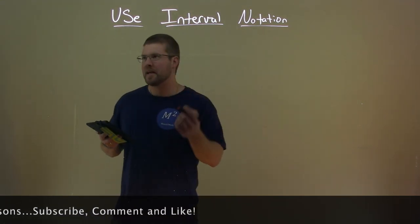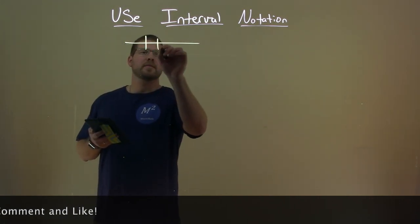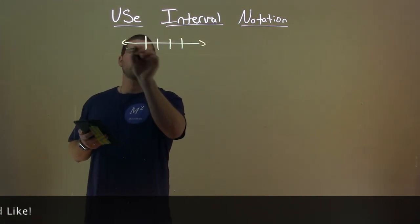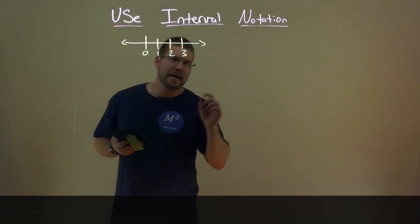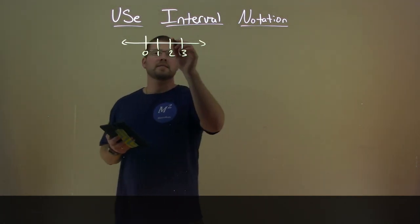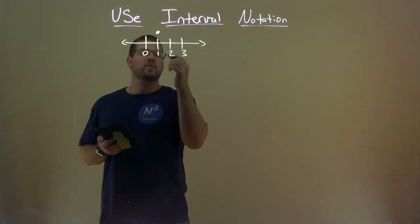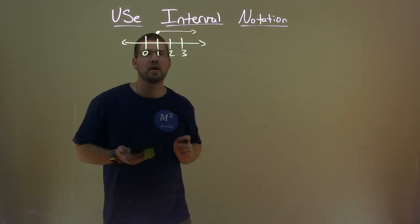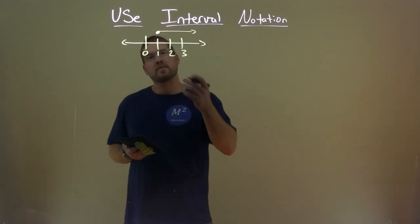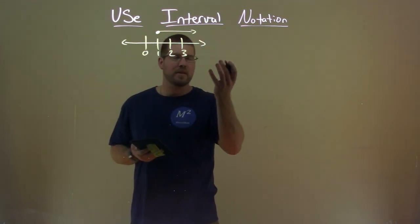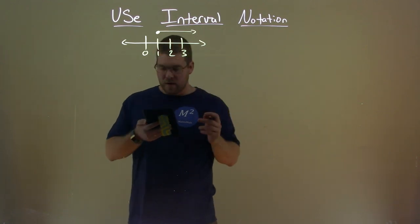So if you remember the number line, if you had a number line here that just kind of went on, we have 0, 1, 2, 3, and we want to say this number — whatever it is — is from 1 and it can be greater than that. So numbers that this value x — let's say this number line represents x — x can be 1 and any number that's greater than 1.